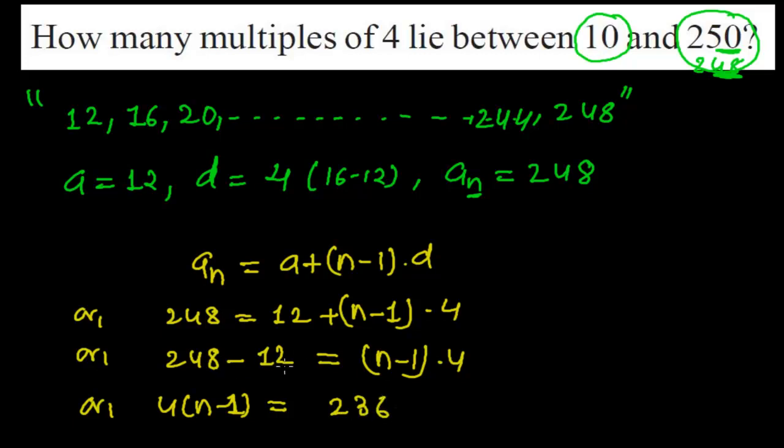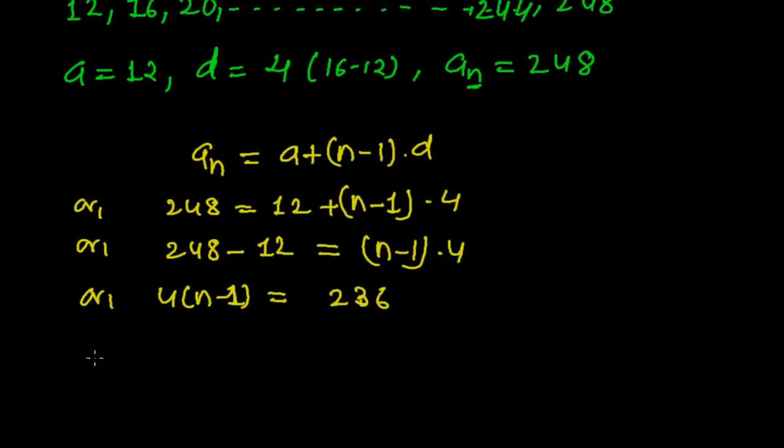8 minus 2 that is 6, 4 minus 1 that is 3, and 2 minus 1, there is nothing. So simply it's 236. Further, what I can write is that (n-1) is equals to 236 divided by 4.